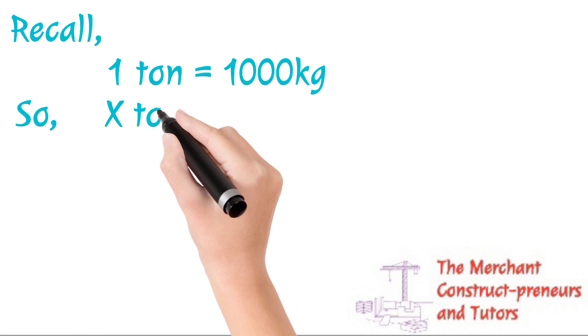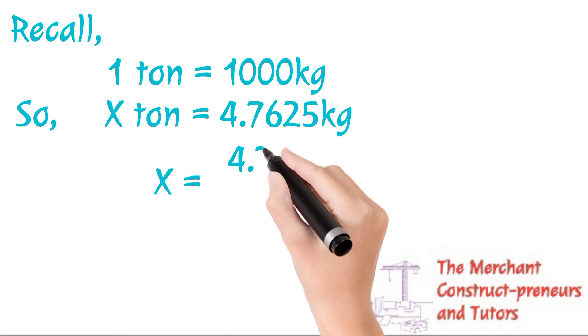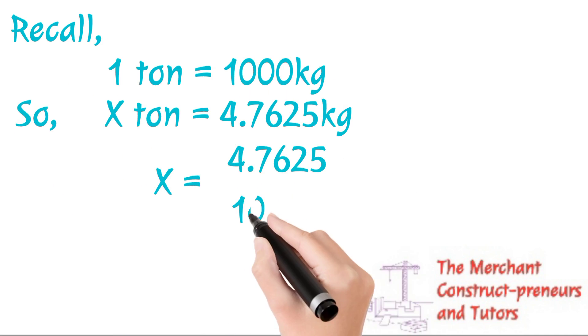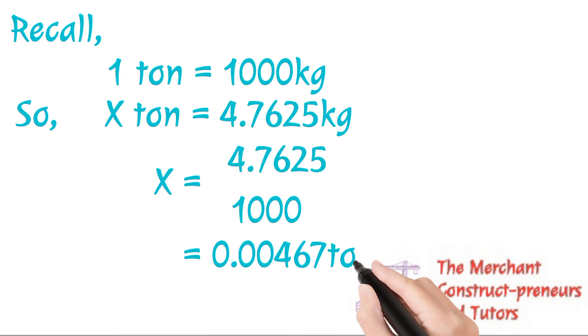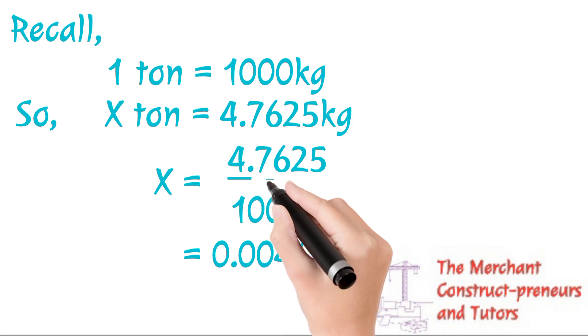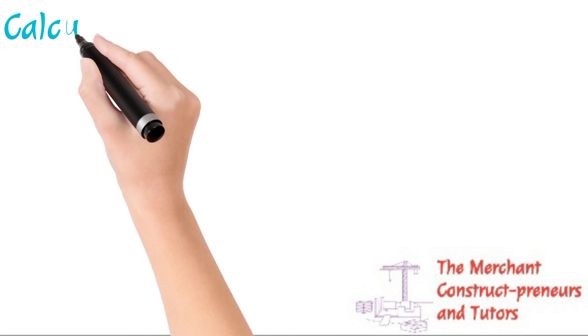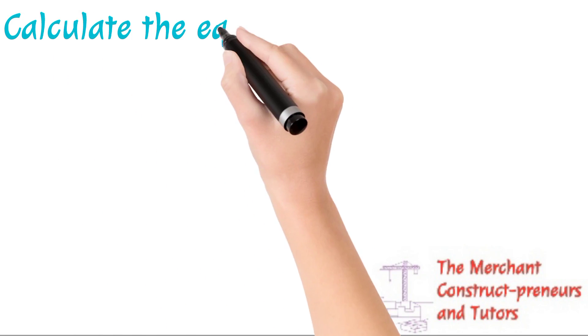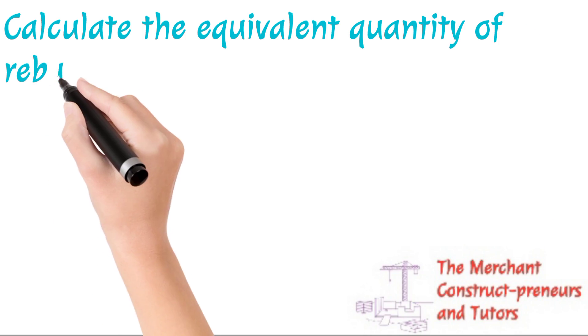So we are going to load the mass now, and we know the volume, so we are moving to the next thing. From our conversion, one ton of any material equals 1000 kilograms. So how many tons is in 4.7625 kilograms? Calculating this, we have our value as 0.00476 tons. I hope we are following. We've gotten the volume, we've gotten the mass, now we are relating it in terms of tonnage.